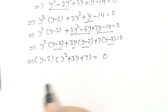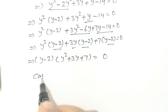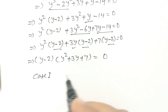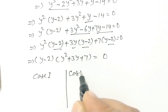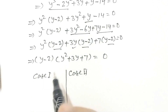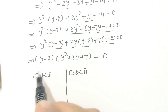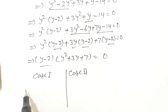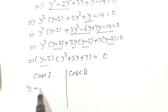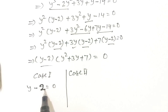Now we have two cases. Case one and case two. Case one: y minus 2 is equal to 0.